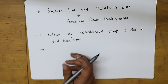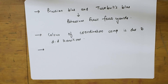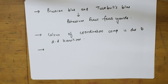In coordination compounds, we have different theories: Valence Bond Theory (VBT), Molecular Orbital Theory (MOT), and Crystal Field Theory (CFT). Crystal Field Theory explains certain geometries in terms of Crystal Field Stabilization Energy (CFSE).